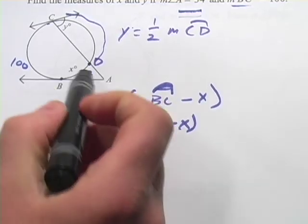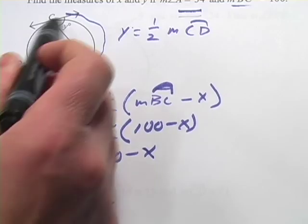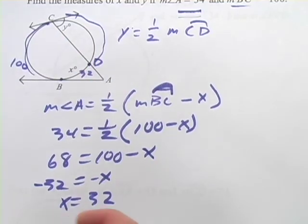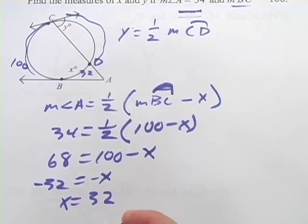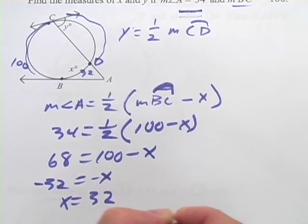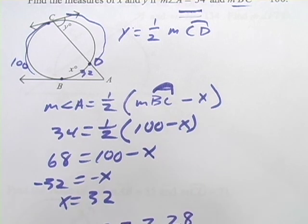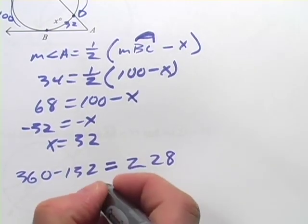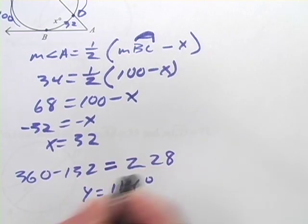Well, how do we do that? We subtract from 360. We've got this portion, that's 100, this portion is 32. So 360 minus 132 is going to be 228. And then we'll take half of that, and we get 114 degrees for Y.